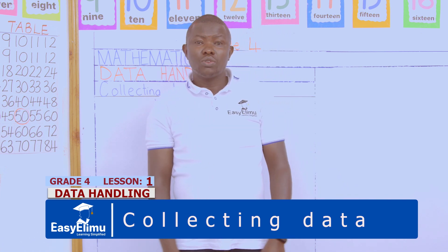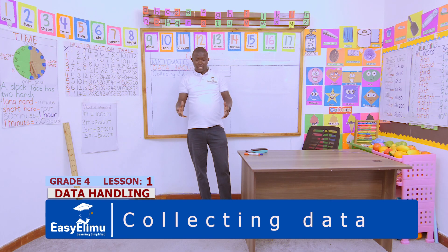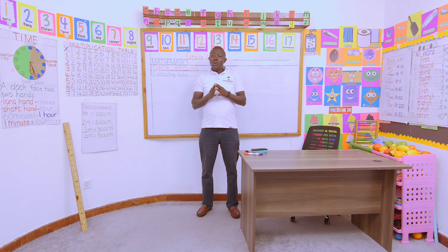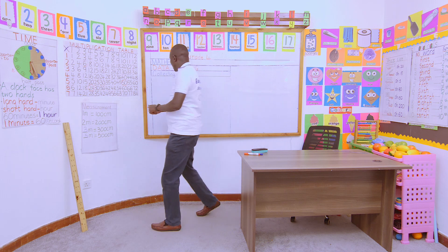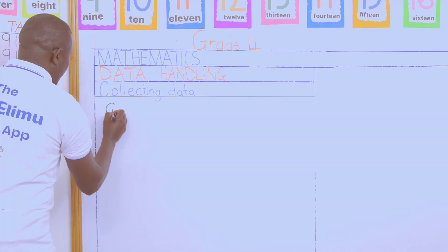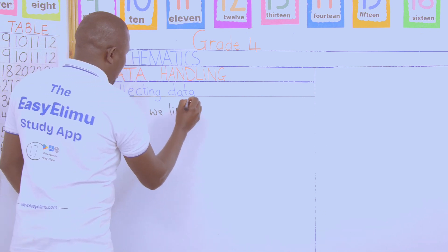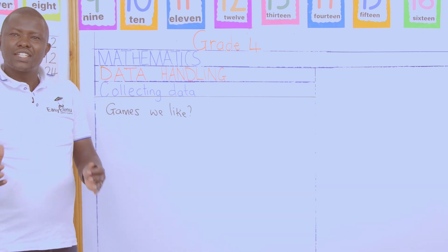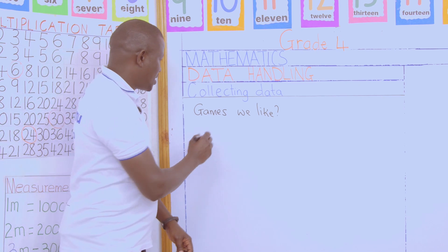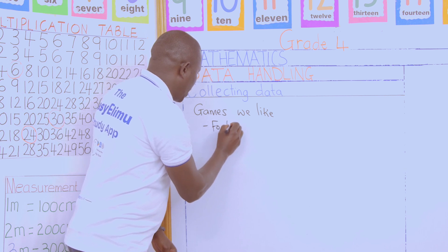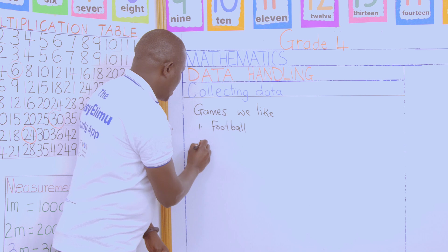How can you represent data? Now let us work in groups and do the following discussion: what games do you like most? What games do we like in our class? I'll start — Victoria, which games do you like? Your favorite is football. So football is a type of game that Victoria likes.